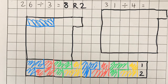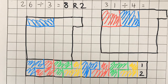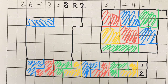You can do whatever patterns you want — that's why it's like a quilt. Putting it into groups of four, you fill it in, and it looks to me like I have seven groups of four and then three left over. So the answer is 31 divided by 4 is 7 with a remainder of 3. You can write your remainder either like this or like this — it means the same thing.